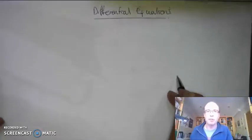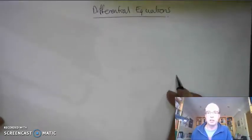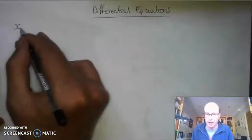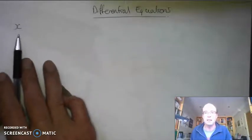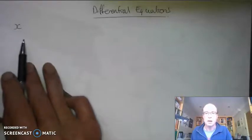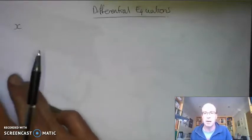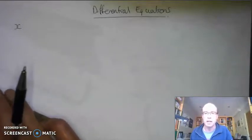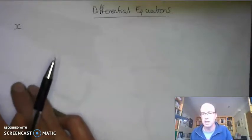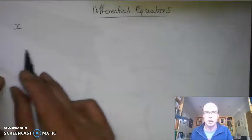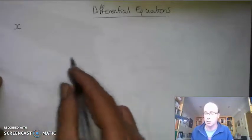This is going to be my bluffer's guide to differential equations. We are going to have a look at a variable x, and x is going to be my distance away from home. I'm going to think about x my distance, speed and acceleration — often the easiest way to get your head around what these differential equations mean.